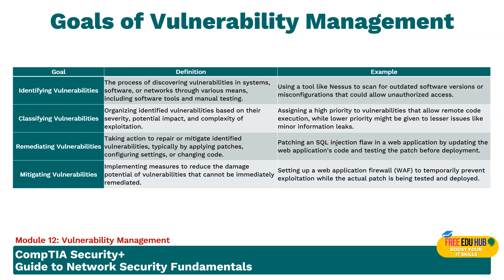Identifying vulnerabilities is the process of discovering vulnerabilities in a system, software, or network through various means including software tools and manual testing. This involves using automated tools that scan for known vulnerabilities and manually testing to uncover new vulnerabilities that automated tools might miss. Identification is crucial because it sets the foundation for all subsequent actions in the vulnerability management process. An example could be using analysis scans for outdated software versions or misconfigurations that could allow unauthorized access.